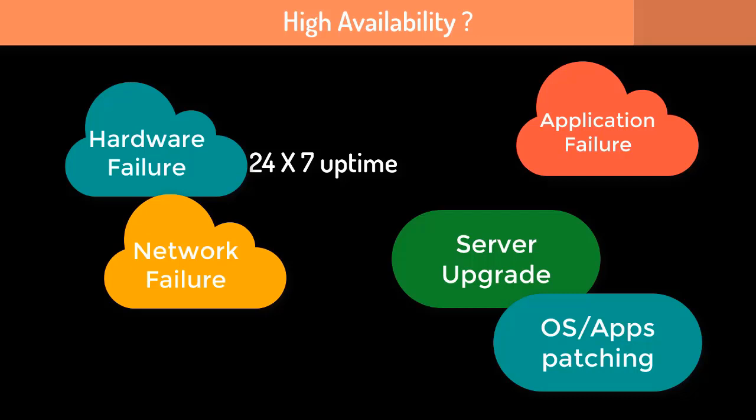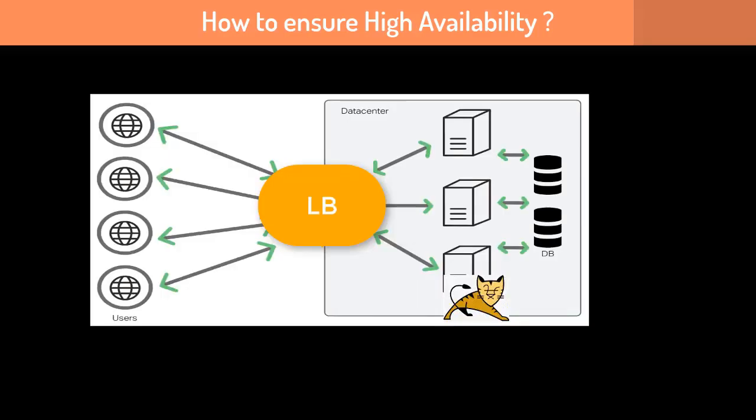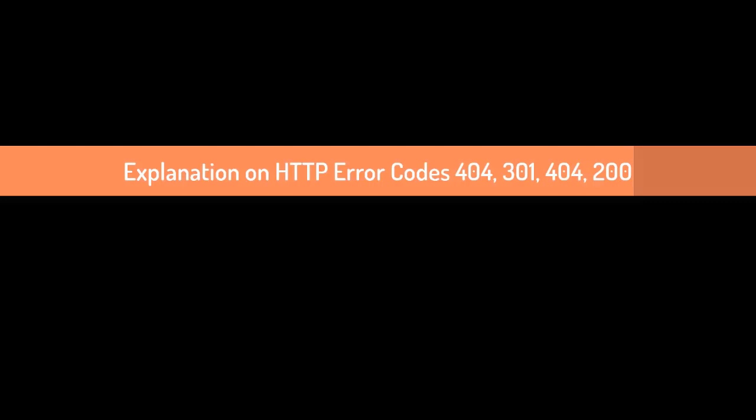In all those cases the application has to be up and running for the end user. High availability can be ensured via horizontal clustering — in a cluster, if one node fails, another can take up the request from the end user and service it.